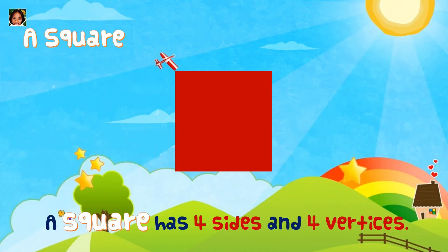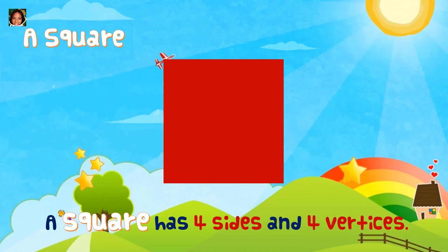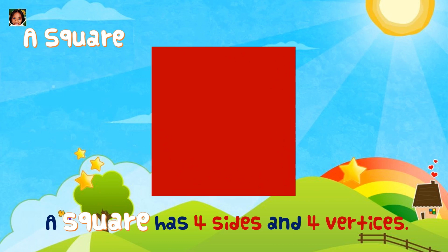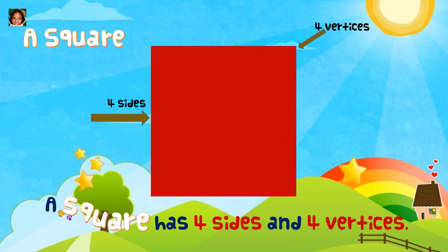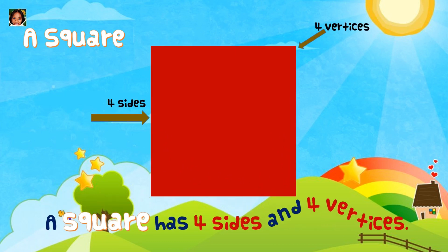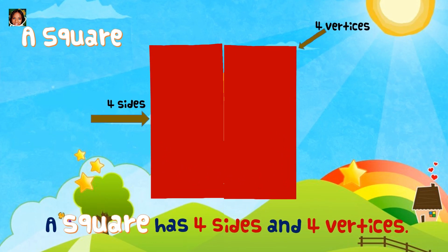Square. A square has four sides and four vertices.